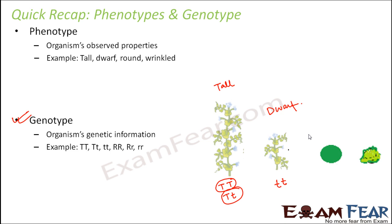Here you can see a round seed and a wrinkled seed. For a round seed, the genotype would be capital R, capital R — or it could also be capital R, small r. For a wrinkled seed it will be small r, small r.